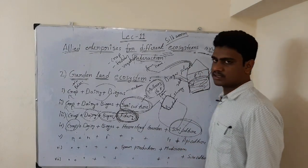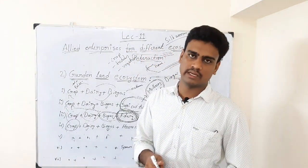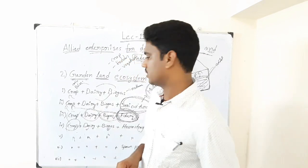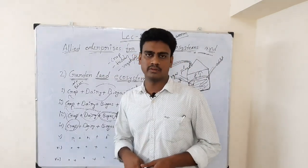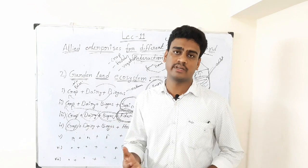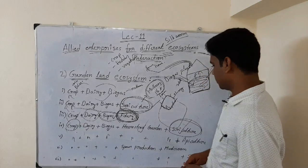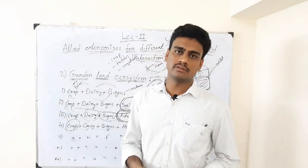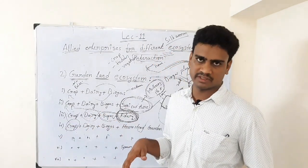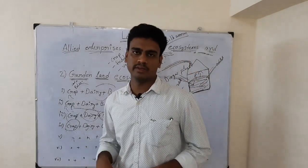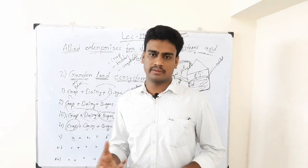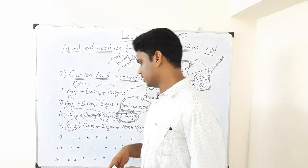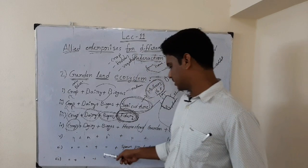The fifth model adds apiculture — honeybee rearing — to the previous components. Every crop requires pollination, and when we raise more honeybees, crop production improves because the bees effectively carry out pollination, giving higher yields. We don't need to provide anything extra to the bees; they take nectar from the crop flowers and feed themselves. From apiculture, we get the comb from the honeybee house, and from the comb we get honey, providing additional income to the farmer.